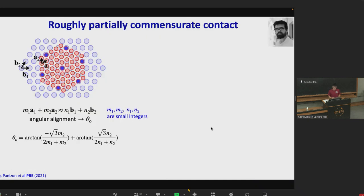Directional locking appears whenever there is a roughly partially commensurate contact, shown by this equation: M1·A1 + M2·A2 ≈ N1·B1 + N2·B2, where A1, A2 are the primitive vectors of the colloidal cluster and B1, B2 are the primitive vectors of the periodic surface, and M1, M2, N1, N2 are small integers. Such an equation requires an angular alignment between the two lattices, which leads to orientation locking.